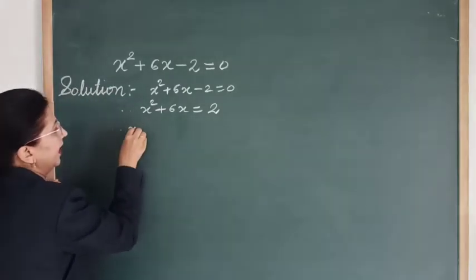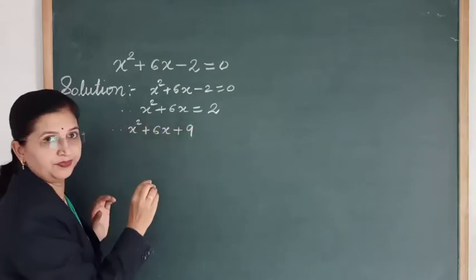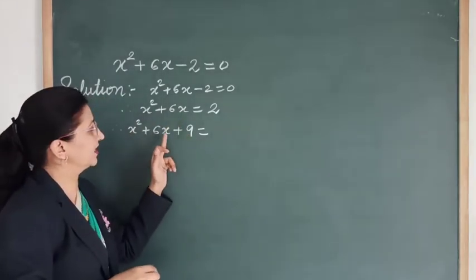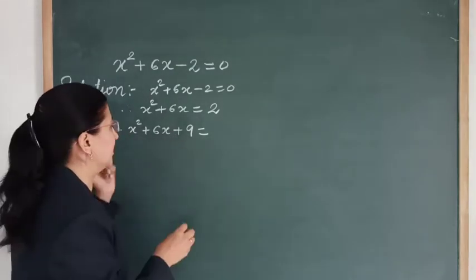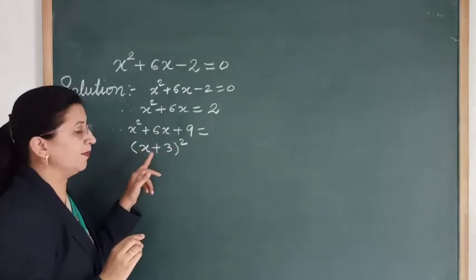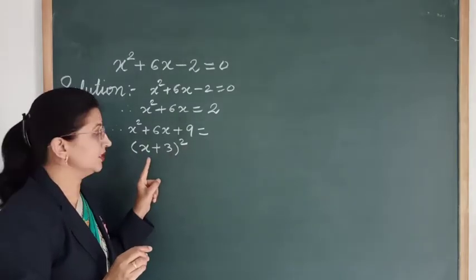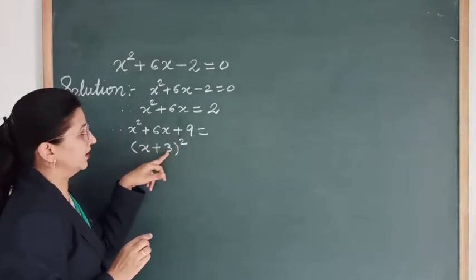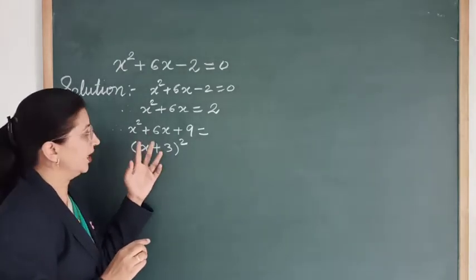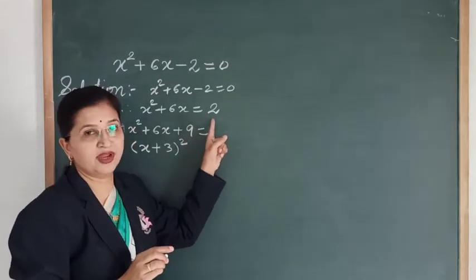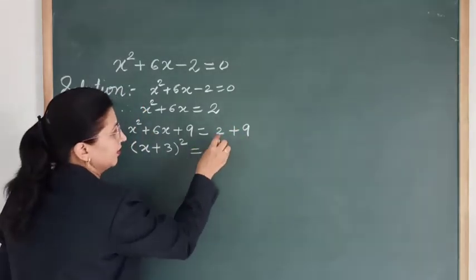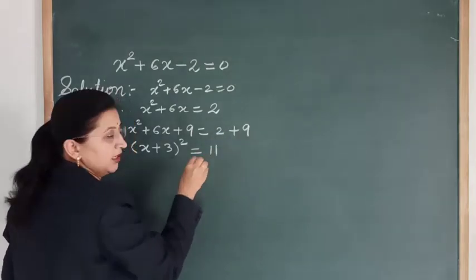We add 9 to the LHS to get x² + 6x + 9, which is the expansion of (x + 3)². Using the identity (a + b)² = a² + 2ab + b², here b² = 3² = 9, and 2ab = 2 × x × 3 = 6x. Since we added 9 to the LHS, we must also add 9 to the RHS. So the RHS becomes 2 + 9 = 11. Now the LHS is a perfect square and the RHS is 11.